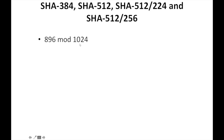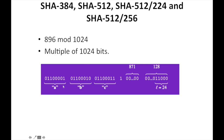For another example, if you need a 1024-bit block size, use mod 896 mod 1024. This is used in SHA-384, SHA-512, SHA-512/224, and SHA-512/256 — the entire algorithm family uses multiples of 1024 bits. For example, given 'abc', we append a '1', then zeros, and finally the length to make it a multiple of 1024 bits.